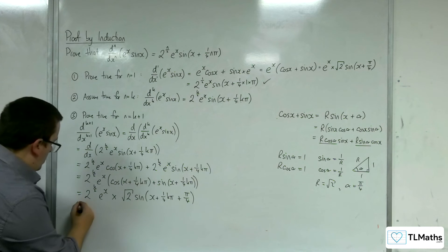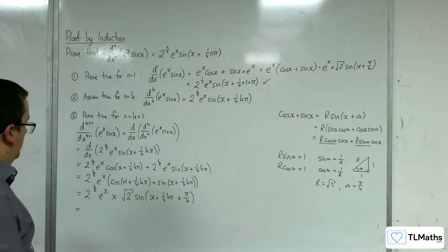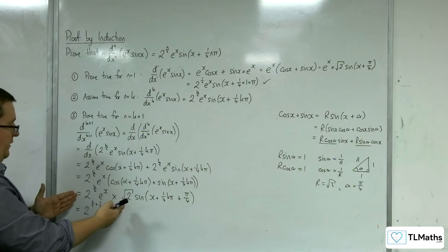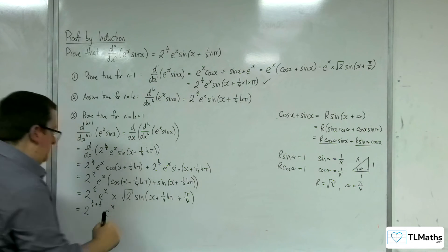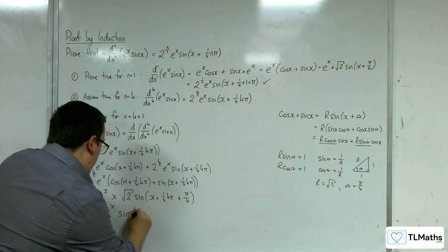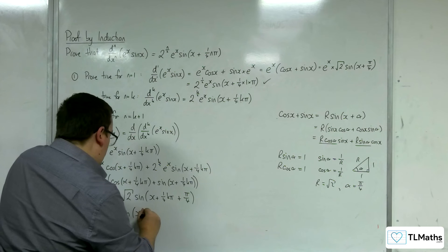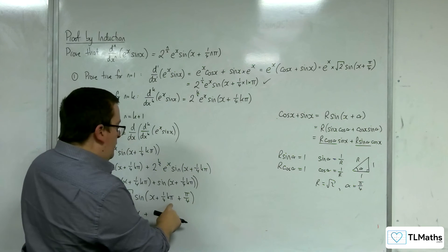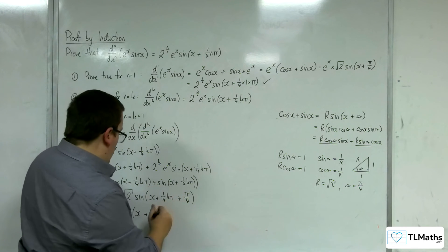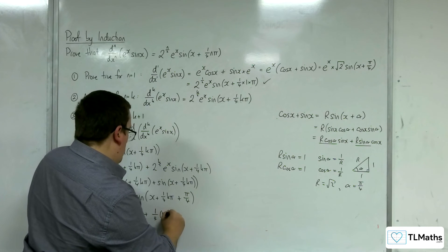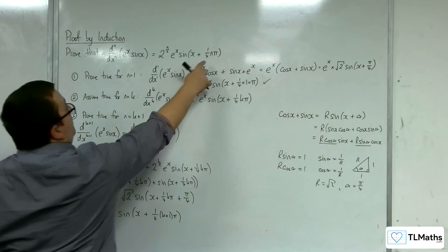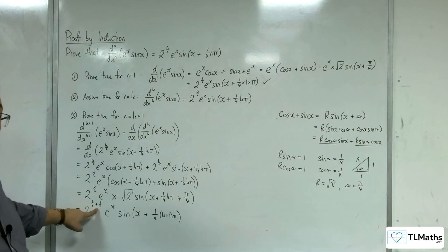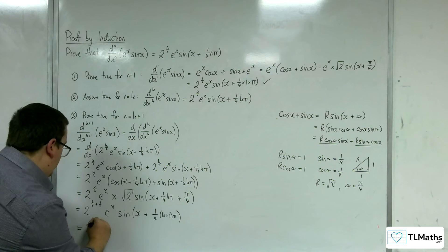Now that's 2 to the half. So this is 2 to the k over 2 plus 1 half, using my addition of indices here, e to the x sine of x plus, now, thinking about how I want to get this, I want the quarter, they've both got a quarter and they've both got pi. So if I can factor out that, so quarter, and we'd have k plus 1 pi, so it's in the correct format. Over here, we've got k over 2 plus 1 half, which is the same as k plus 1 over 2.